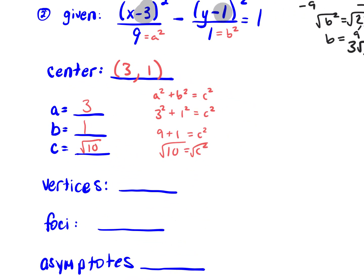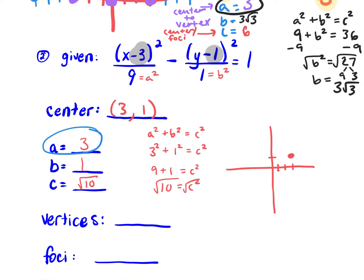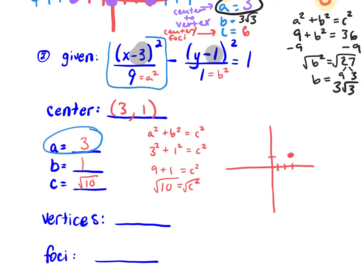Now let's figure out our vertices. Our center is at 3, 1, and our vertices are a distance away from the center. Since x comes first in our equation, we're moving horizontally — so our vertices go to the right 3 and to the left 3 from our center. Our two vertices are at 0, 1 and 6, 1.